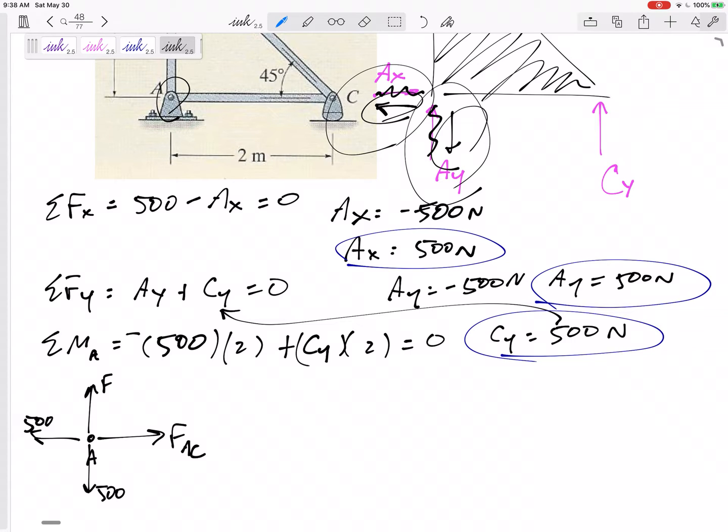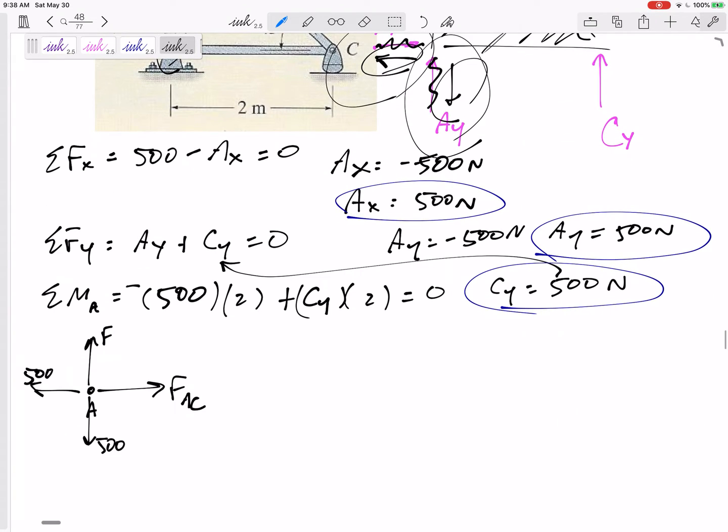Same thing right here, the force in member AB. I know it's pin to pin, I know it's in that direction. It could be up or down, I just guessed tension.